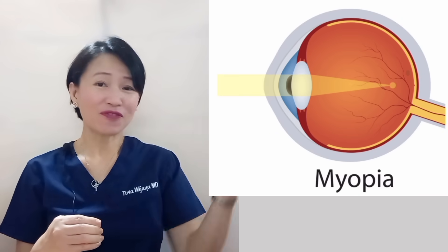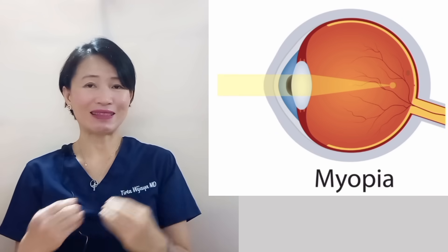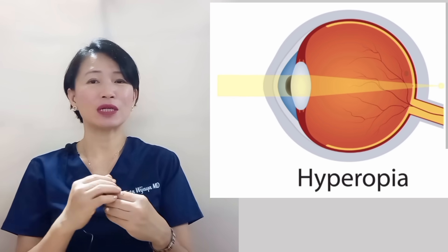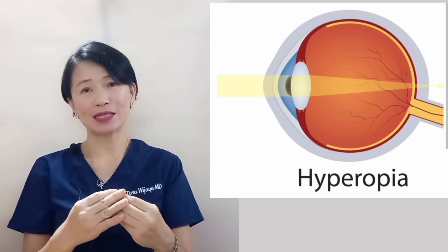If the focal point falls in front of the retina, we call it myopia or near-sightedness. If the focal point is behind the retina, we call it hypermetropia or far-sightedness. We will discuss refractive errors in another video. Not only must the lens be flexible, but in order to be able to refract the light properly, the lens must be clear too.